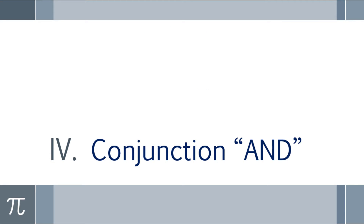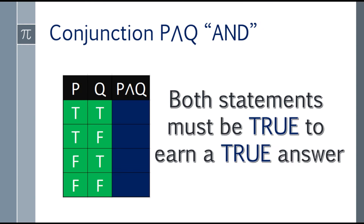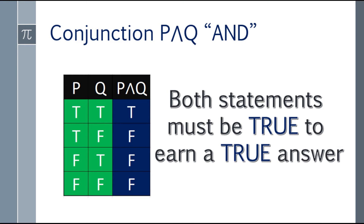The next topic is conjunction, or AND. The logical operator here is the inverted V. The technique: both statements must be true to earn a true answer. If only one is true, that's not enough. If both are false, the answer is false. First row: both are true, so the answer is true. Second and third rows: only one is true, so the answer is false. Fourth row: both are false, and we need both true — so the answer is false.